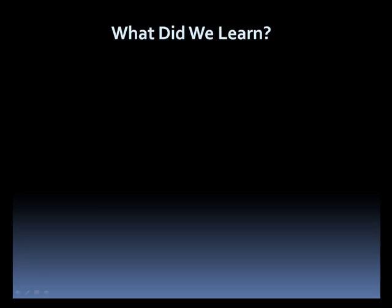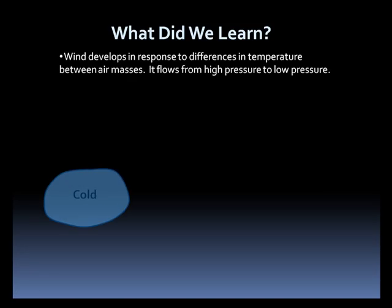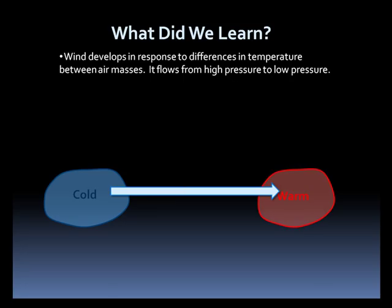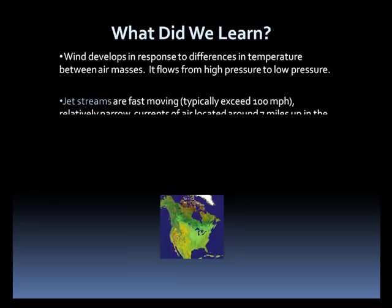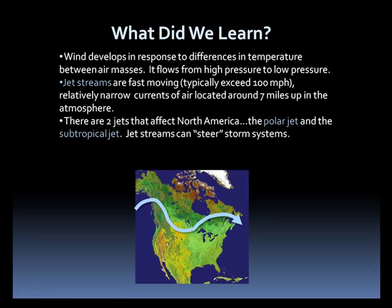So what did we learn? Wind develops in response to differences in temperature and, thus, density between air masses. Air flows from high pressure to low pressure. Jet streams are fast-moving currents of air in the upper atmosphere and typically exceed 100 mph. There are two jet streams that affect North America: the polar jet and the subtropical jet.